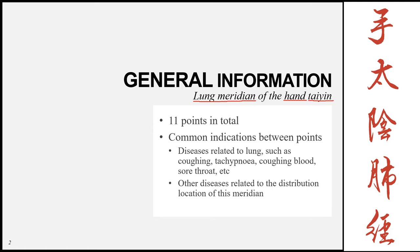This meridian has 11 points in total. The common indications of the points are diseases related to the lung, such as coughing, tachypnea, coughing blood, and sore throat. It can also be used for other diseases related to the distribution location of the meridian — that is, disorders along where the meridian flows. This is why it's important to know the theory from the introduction lecture, so that from the name of the meridian alone you can know where it runs and what conditions it can treat.